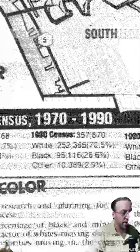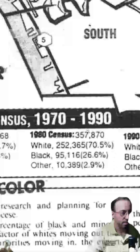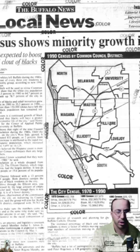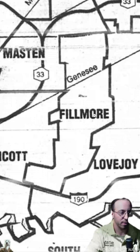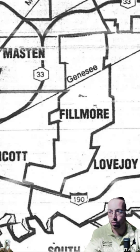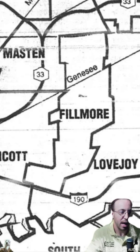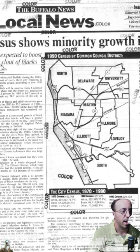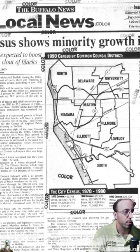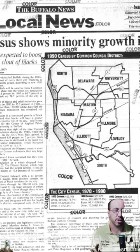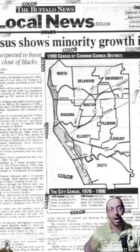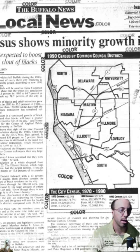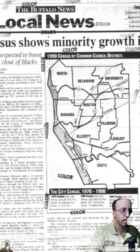These are kind of the districts at the time. You can see the Fillmore district — it's solely focused on the east side, totally different than what we see now in 2023. That was the first thing: the council is redoing the maps because of the changing census information.